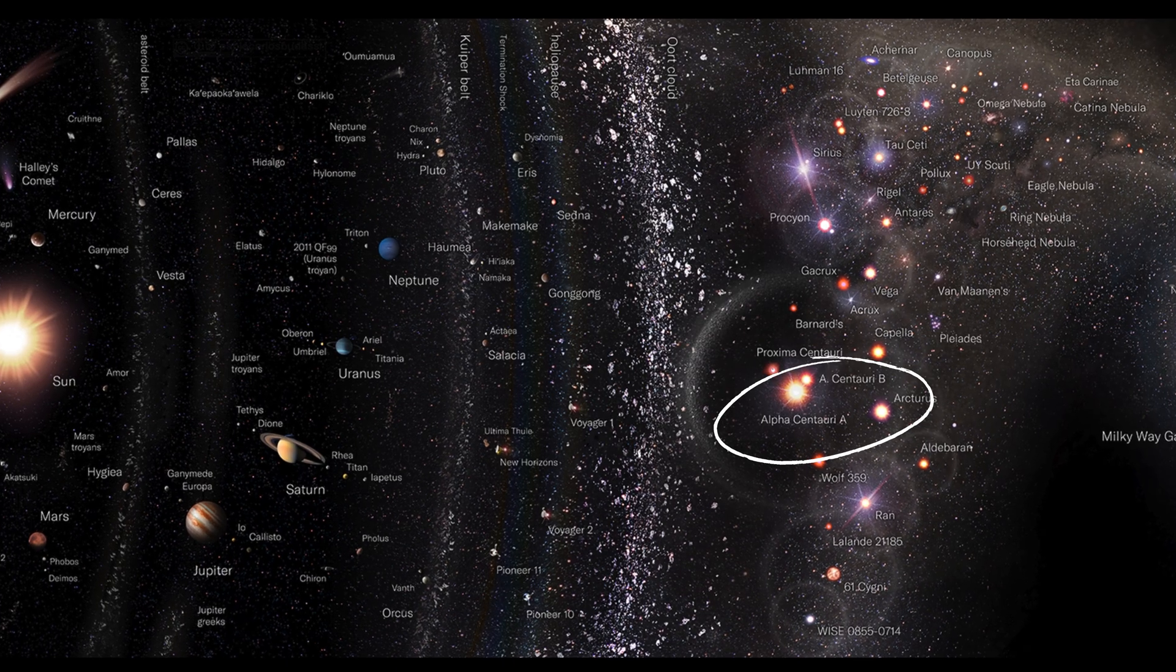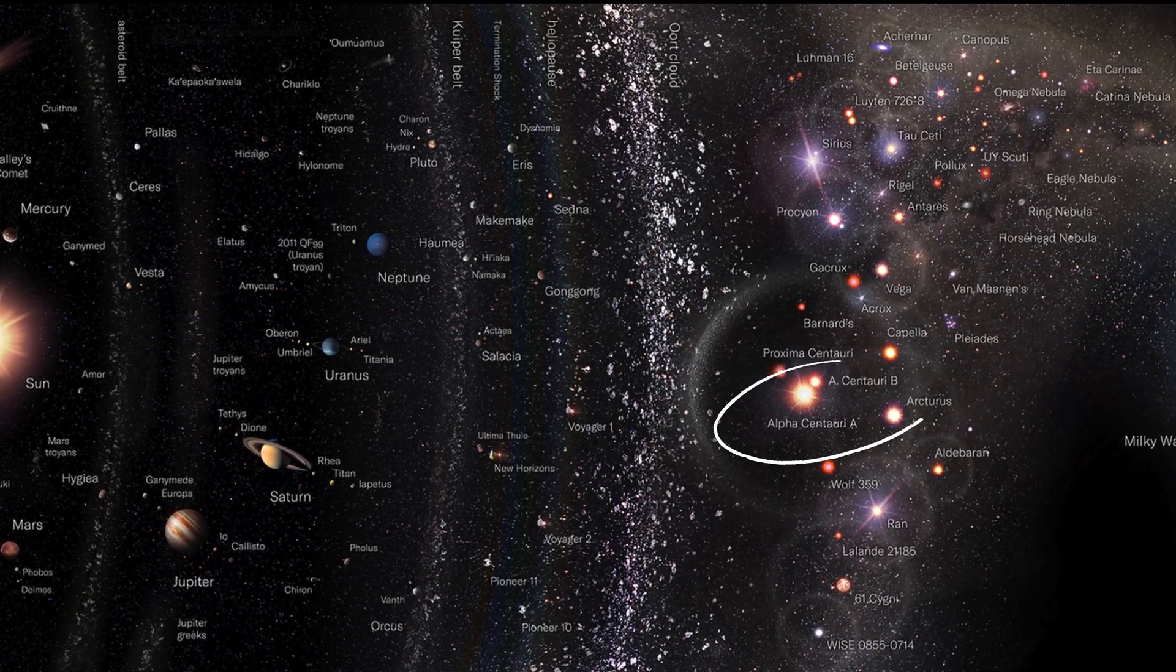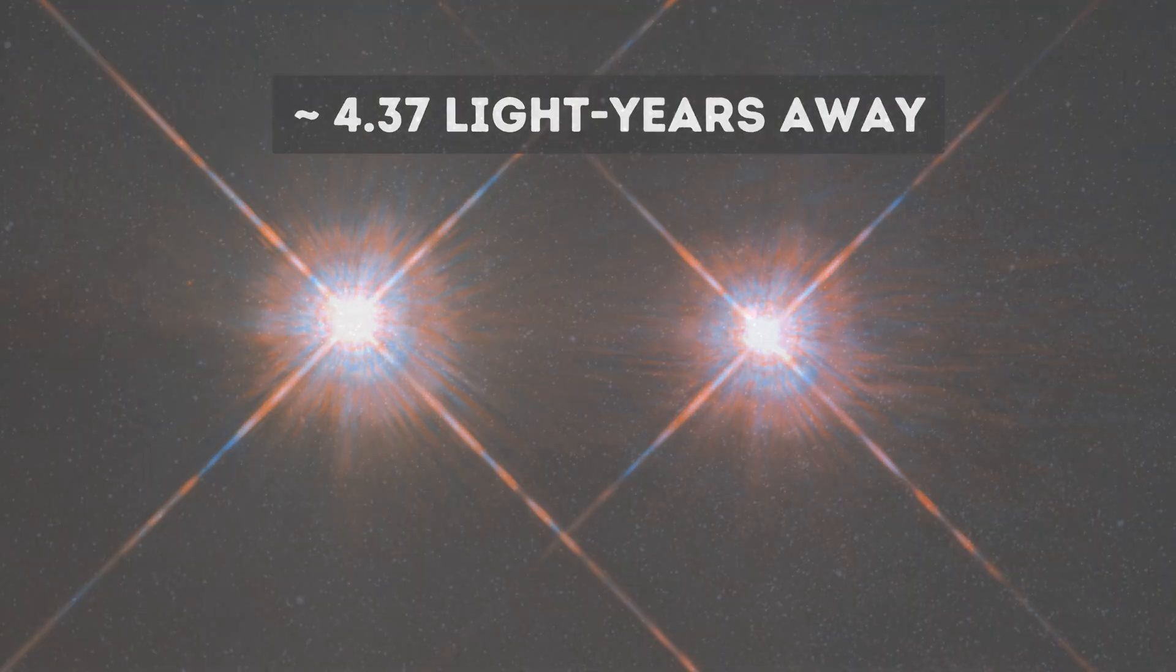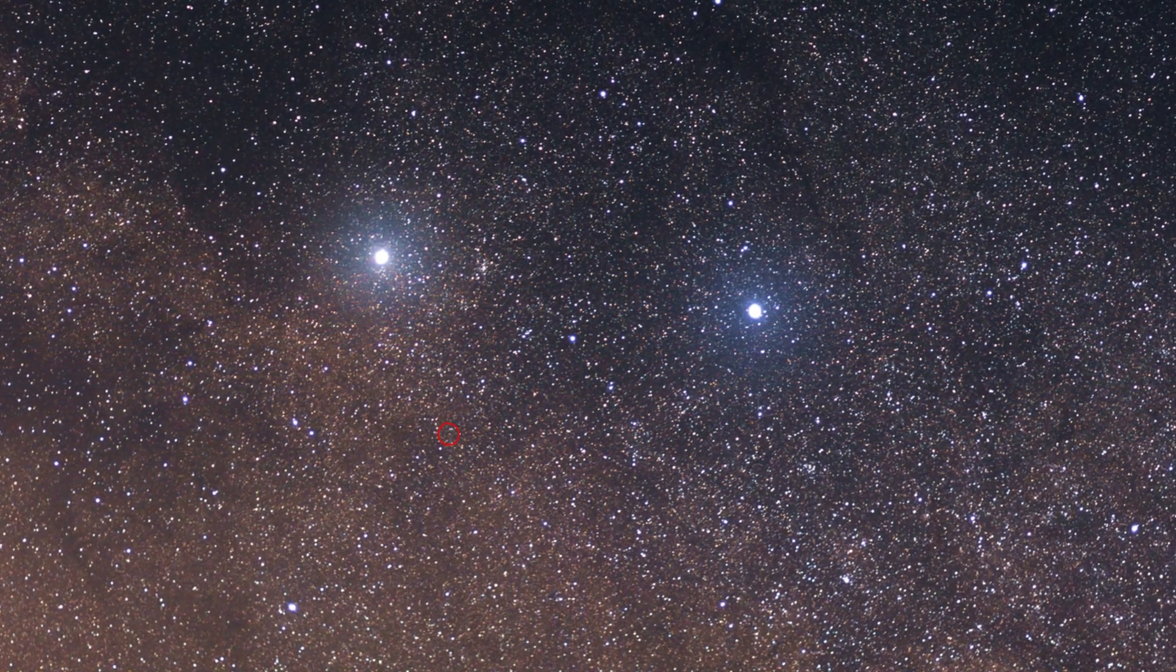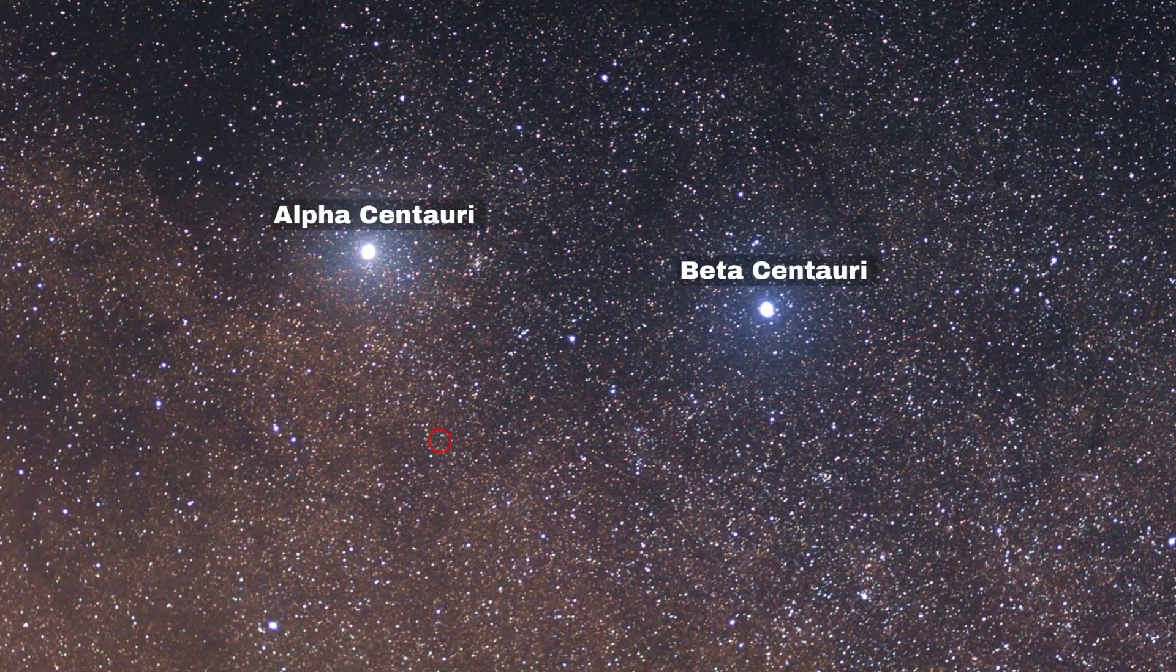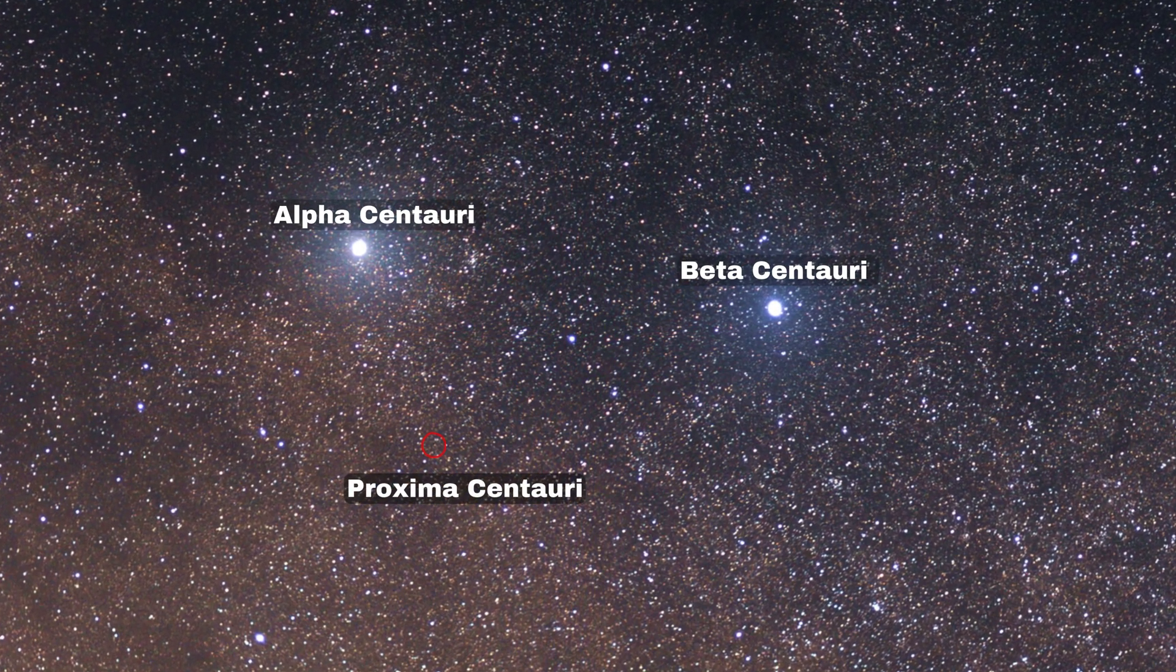Among the other stars in proximity to the Sun are Alpha Centauri A and B, which are about 4.37 light years away. It is a triple star system with stars Alpha Centauri A and B, and Proxima Centauri as the three stars in this system.